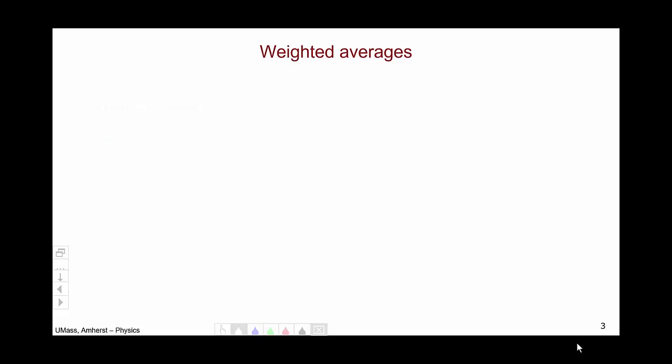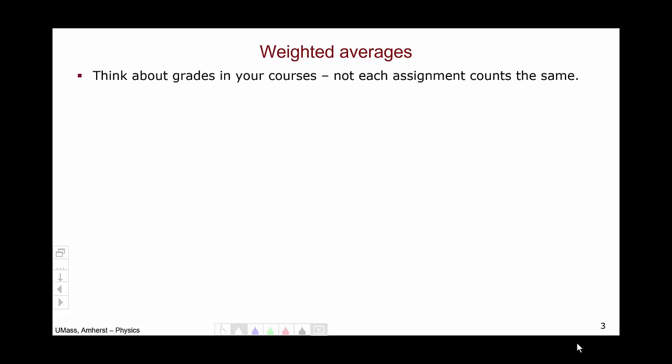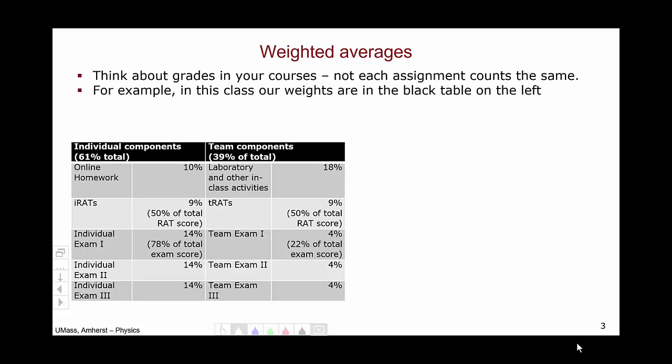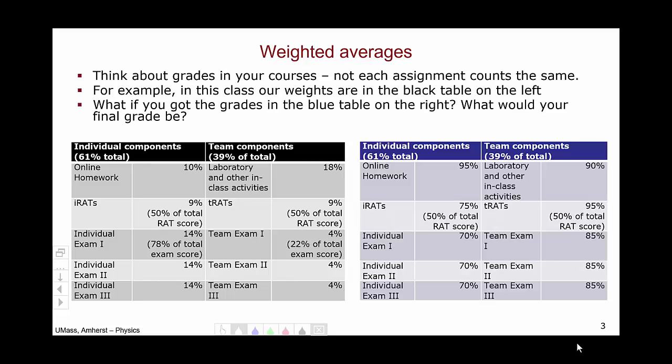So the first part of the definition of center of mass is the mass-weighted average location of an object. Let's think about what a weighted average is first, in a context with which you are probably more familiar. Think about your grades. Not each assignment in a given course counts the same. For example, in this class, the weights for the different assignments are provided in the black table on the left.